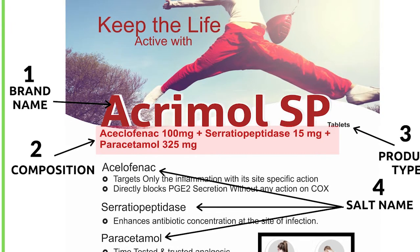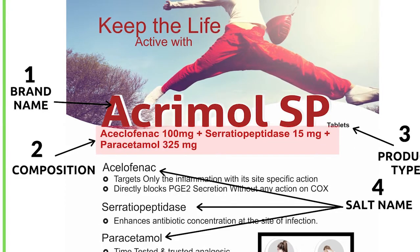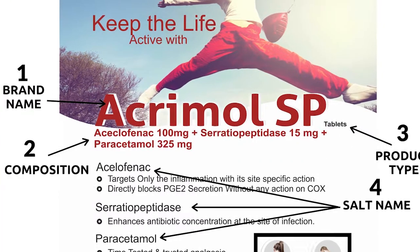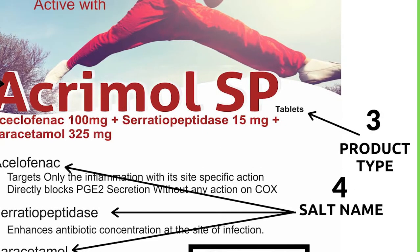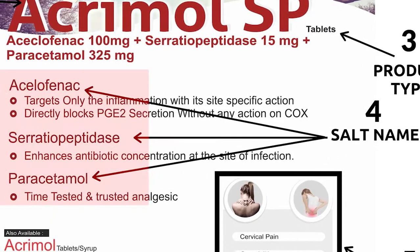Composition shows the salts present in the drug in exact amounts. This information is very important for the doctor to find out when to prescribe that medicine. Product type shows what kind of product it is — tablet, syrup, or something else. Salt name shows the available ingredients in the medicine.